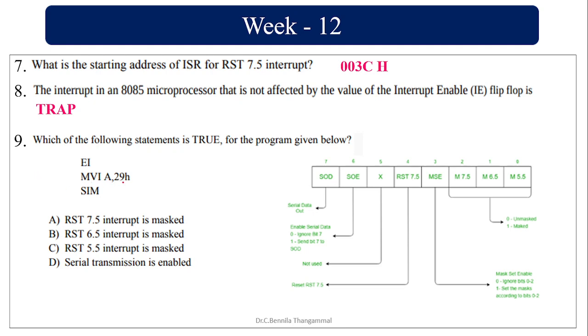MVI A comma 29. This 29 will be moved to the SIM instruction. 29 is 0010 1001 in binary. So this upper bit is not used.